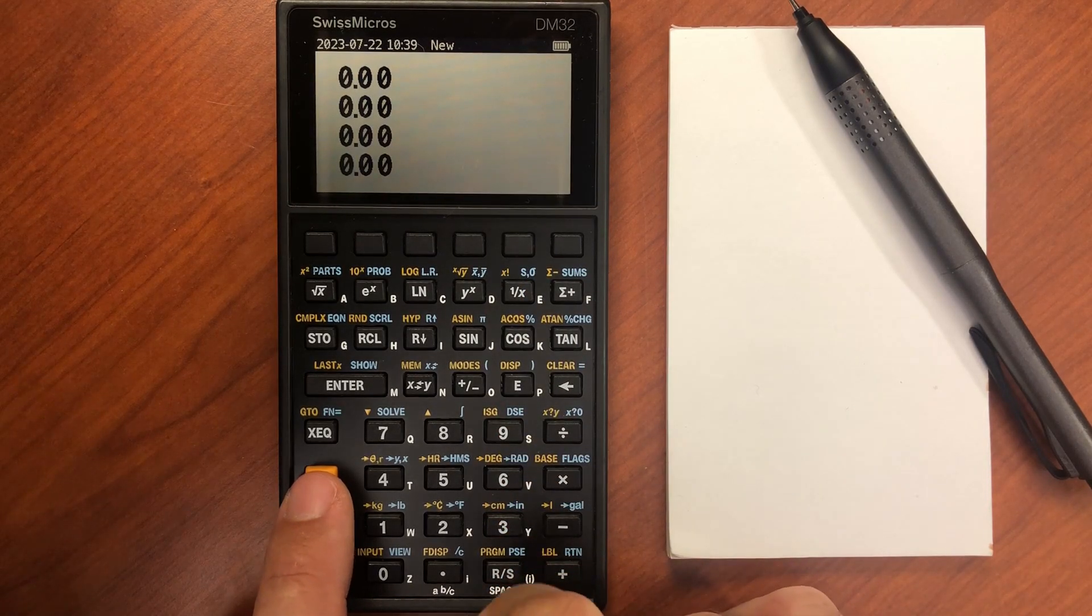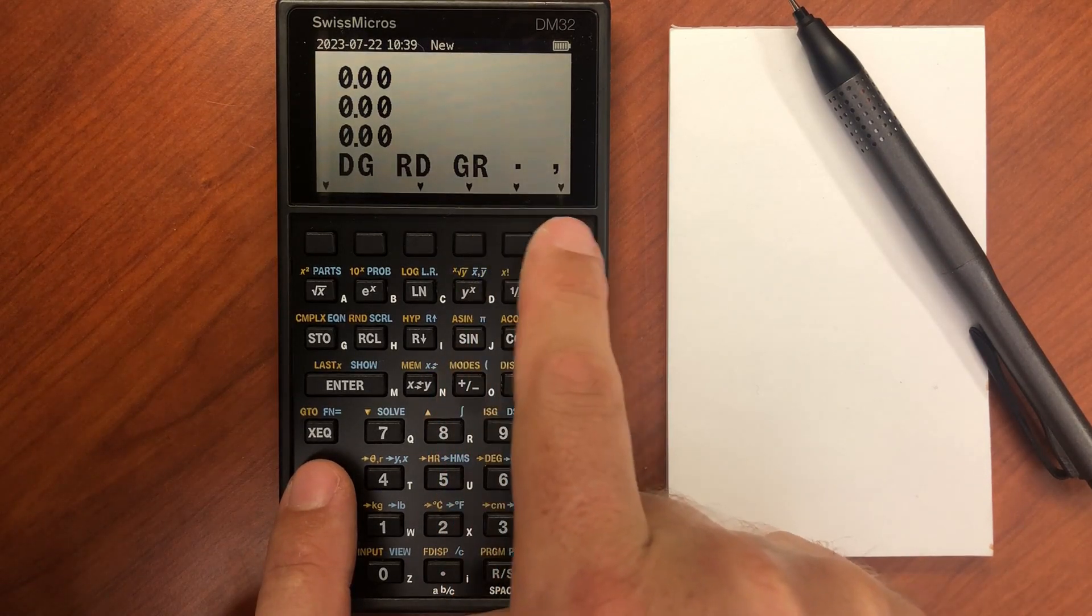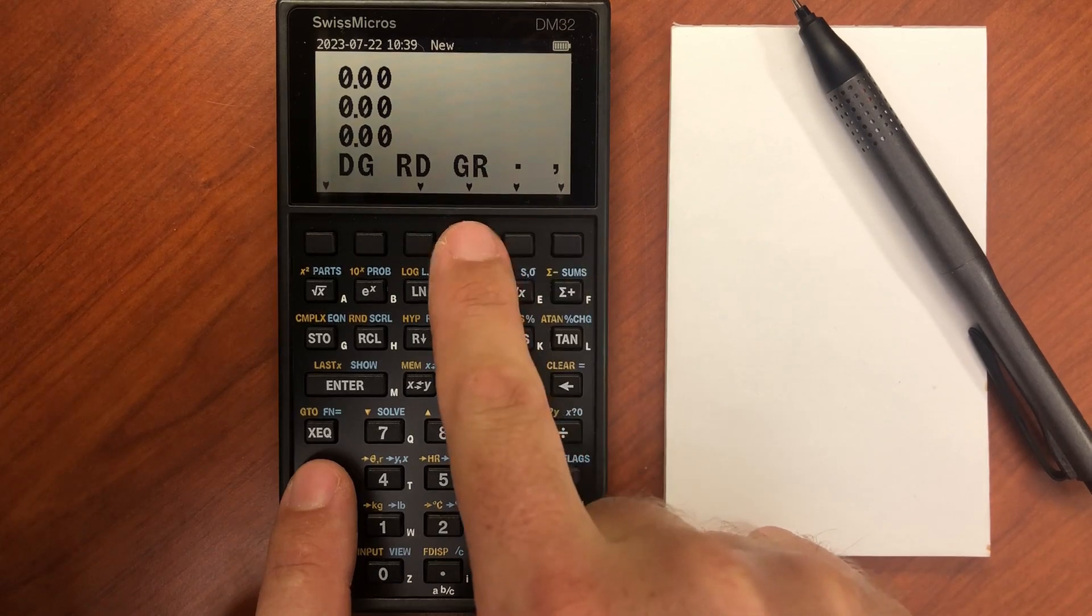And then we have the modes menu. So your degrees, your radians, and then what you want your decimal separator to be, your grad.